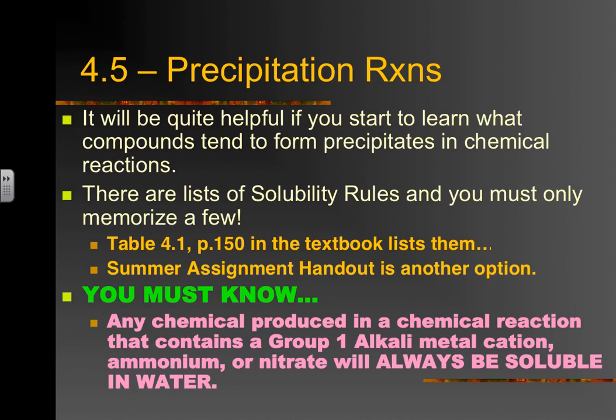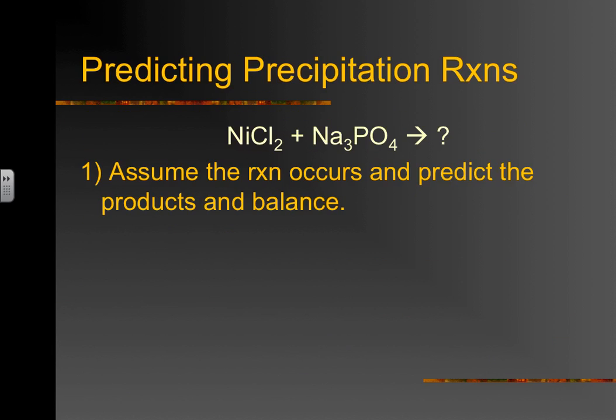You must only memorize a few solubility rules. The ones you must know: any chemical containing a Group 1 alkali metal cation — sodium, potassium, cesium, any of those — anything containing ammonium (NH4+), and anything containing nitrate (NO3-), will be soluble in water all the time. No exceptions, ever. That's the one rule you have to know. Make sure you know it.